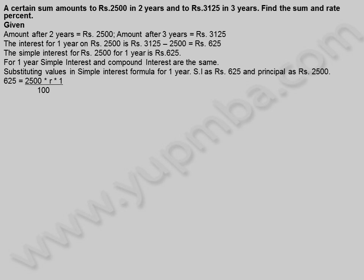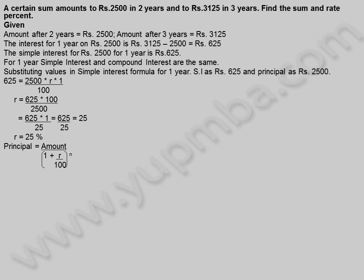Substituting values in the simple interest formula for one year: simple interest is 625 rupees, principal is 2,500 rupees. So 625 = 2,500 × rate × 1 / 100. Rate = 625 × 100 / 2,500 = 625 / 25 = 25. Rate is equal to 25%.